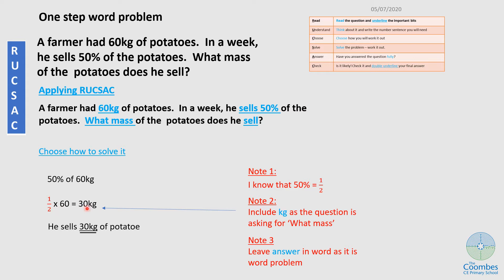But remember I have to put the kg because it's asking what mass. Have I answered the question fully? I think so. That's reasonable. In leaving my answer, because it's a word problem, I have to leave it as a sentence. So he sells 30 kg of potato, which I have on the double underline here.